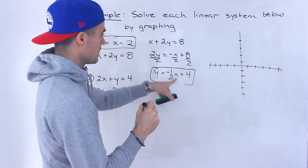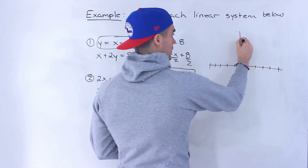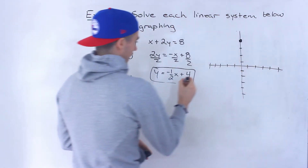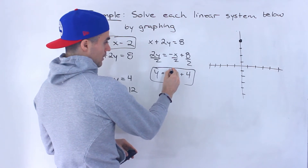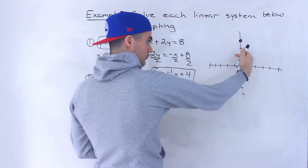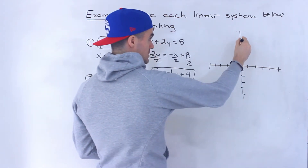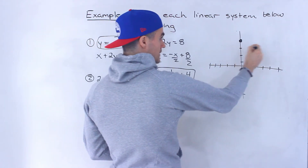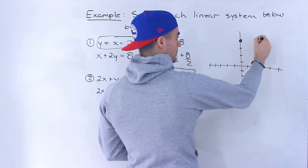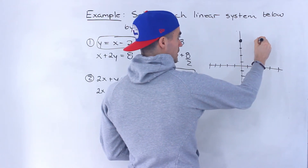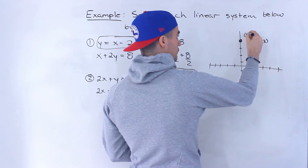Starting with this line, notice the b value is four, which is the y-intercept. So the slope is negative one over two — the rise is negative one, going down by one, and then it runs two. So it's going to go down by one and then run two. That point would be at two and three, and this point here was zero and four.